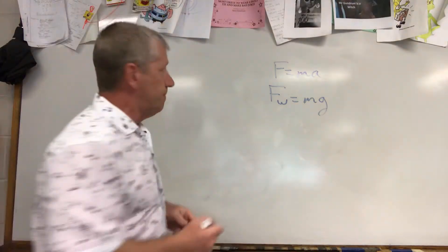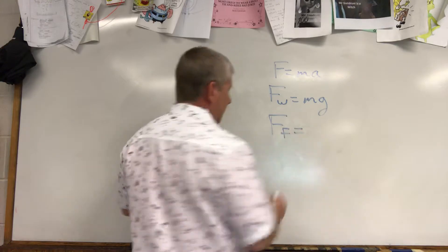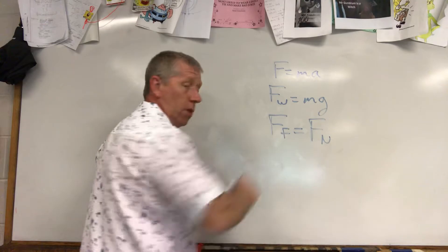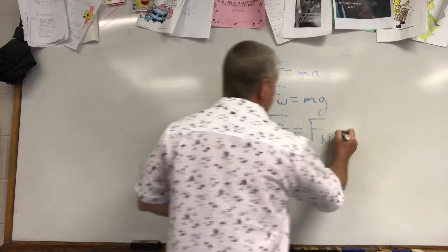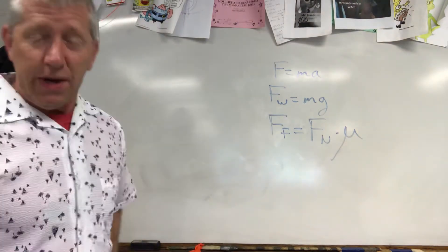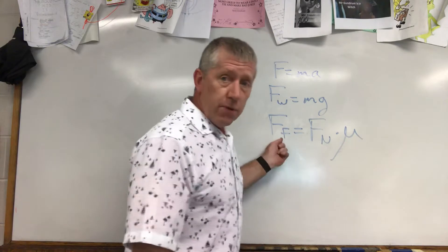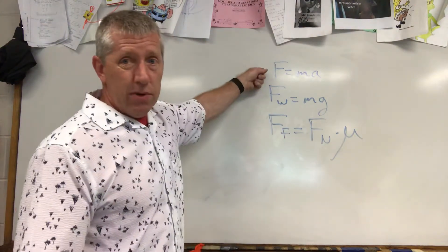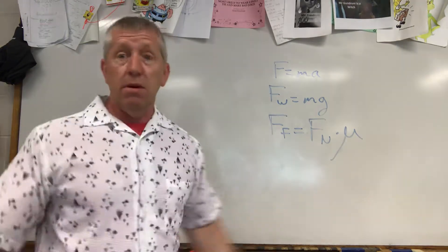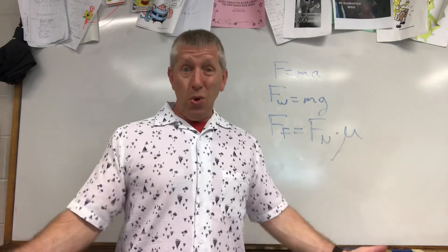The third equation: F sub f, force of friction, equals F sub n — that's the normal force — times the Greek letter mu, the letter u with a thing in front. That's the force of friction equation. Those are your three equations for the entire unit. They're the easiest thing you can do in algebra — three formulas, piece of cake.